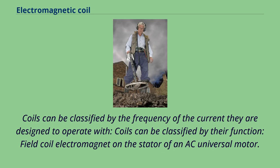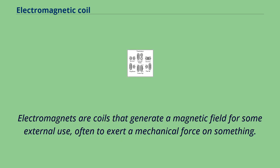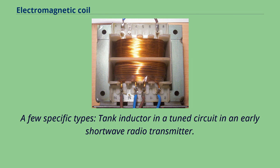Coils can be classified by the frequency of the current they are designed to operate with. Coils can be classified by their function. Field coil electromagnet on the stator of an AC universal motor. Electromagnets are coils that generate a magnetic field for some external use, often to exert a mechanical force on something.